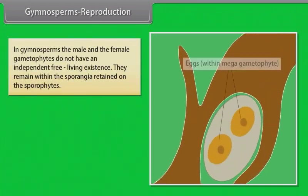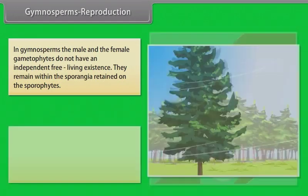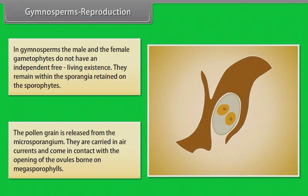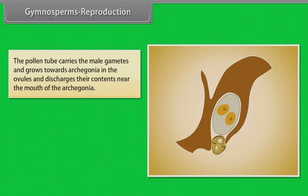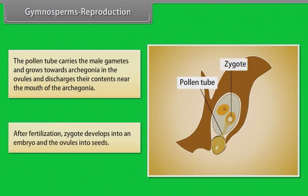In Gymnosperms, the male and the female gametophytes do not have an independent free-living existence. They remain within the sporangia retained on the sporophytes. The pollen grain is released from the microsporangium. They are carried in air currents and come in contact with the opening of the ovules borne on megasporophylls. The pollen tube carries the male gametes and grows towards archegonia in the ovules and discharges their contents near the mouth of the archegonia. After fertilization, the zygote develops into an embryo and the ovules into seeds.